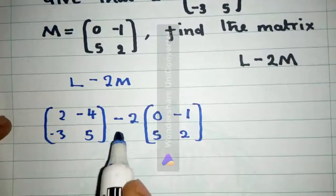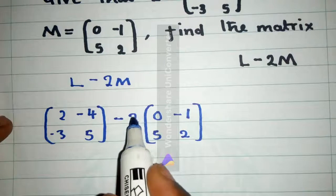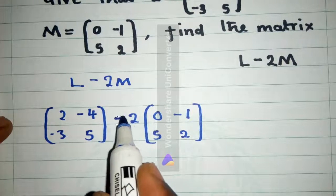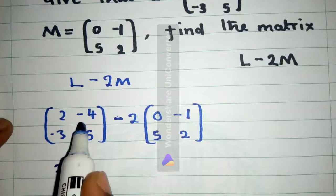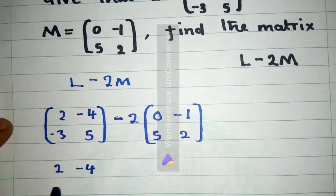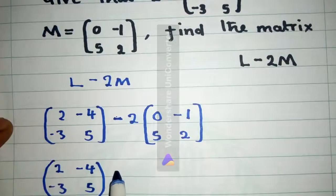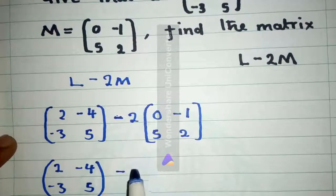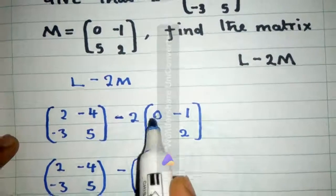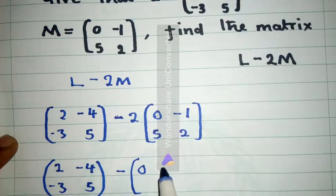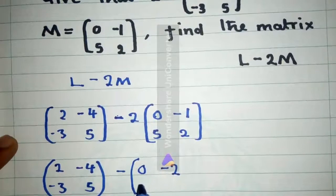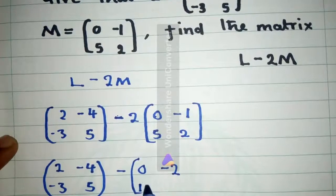So what we do is we distribute this 2. Forget about the sign, just get the number, which is here. Get what is here the way it is, minus here, and then you start distributing. 2 times 0 is 0. 2 times negative 1 is negative 2. 2 times 5 is 10. 2 times 2 is 4.